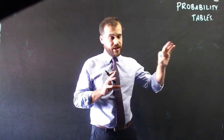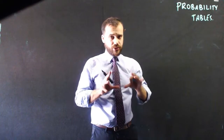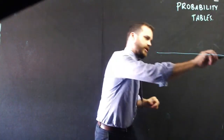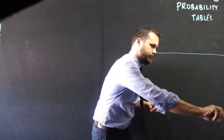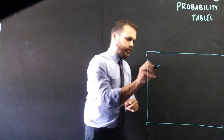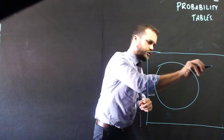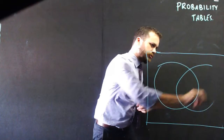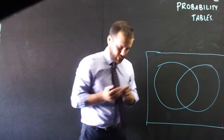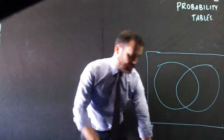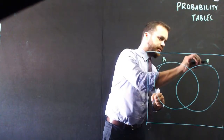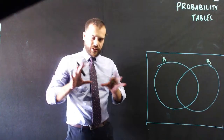So this video is about probability tables, but before we talk about what a probability table is, I want you to look at this Venn diagram. There's my Venn diagram: a circle and a circle. This is set A, and this is set B.